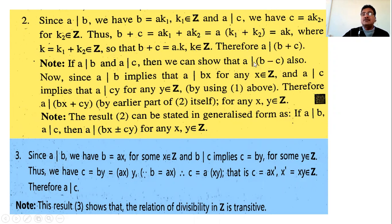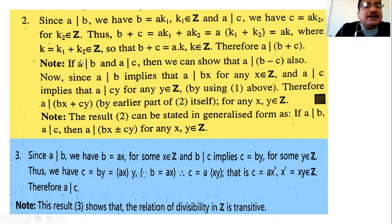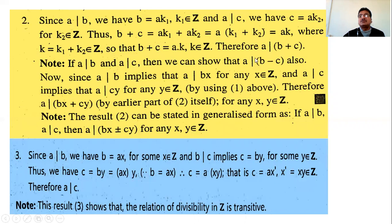We can also show that if a divides b and a divides c, then a divides b−c. Write b = ak1 and c = ak2, then consider b−c = ak1 − ak2 = a(k1−k2). Let k = k1−k2; since k1 and k2 are integers, their difference is also an integer. Therefore b−c is expressed in the form a times some integer, which means a divides b−c.